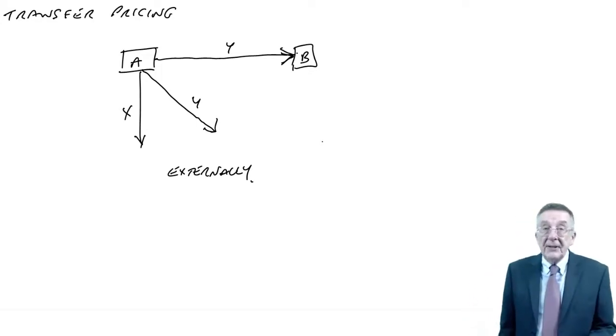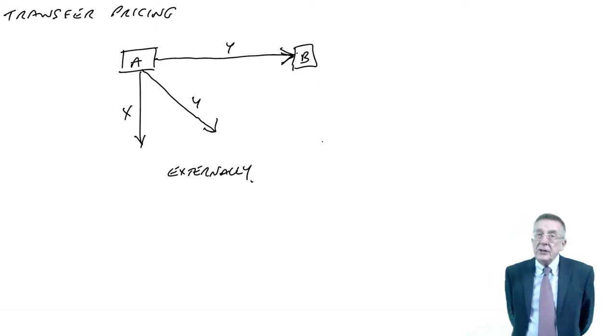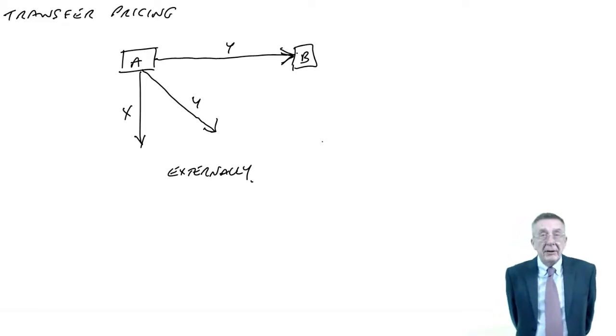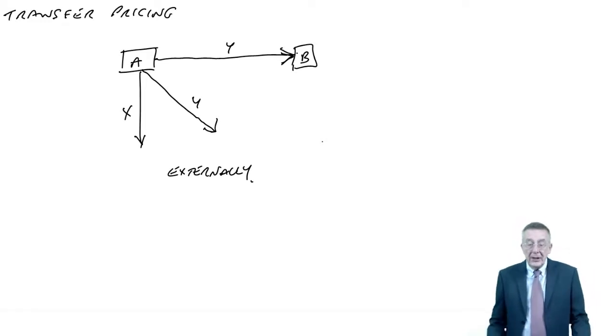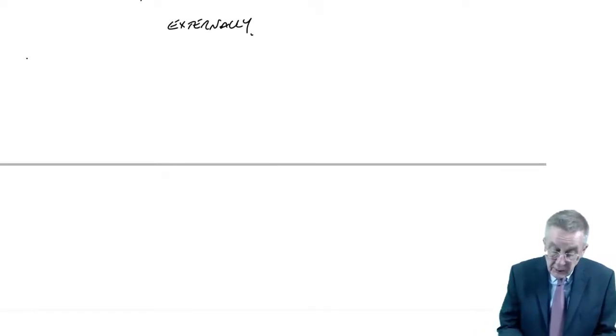Although A, given there's unlimited external demand, A can sell everything it produces externally. B wants Y, well of course they are capable of producing Y, and selling it to Division B. And as I say, they are capable of producing Y and selling it to B, but the question is, what's the minimum transfer price that should be charged to supply Y to Division B?